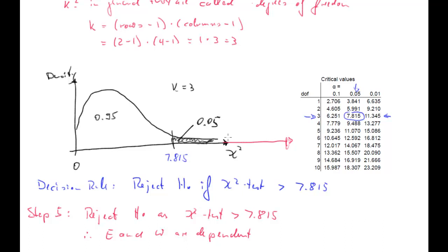Step 5 is the conclusion. Our test statistic was 27.29. 27.29 is clearly larger than 7.815, so we reject H0. We therefore conclude that E (ethnicity) and W (do you feel safe when you walk in the dark) are dependent. So it matters what ethnicity you are for answering whether you feel safe or not. This was the whole test procedure from the lecture.